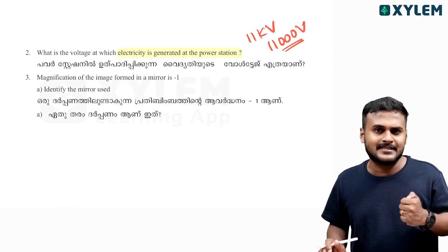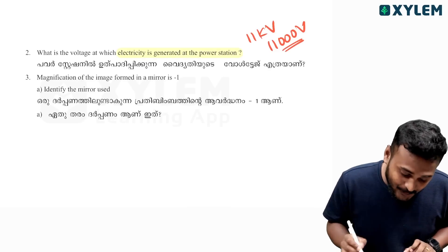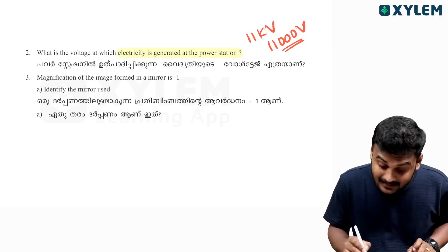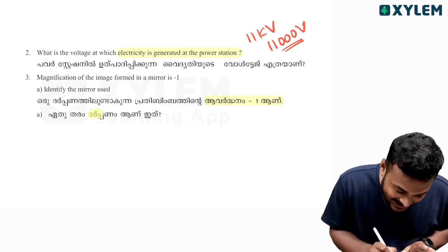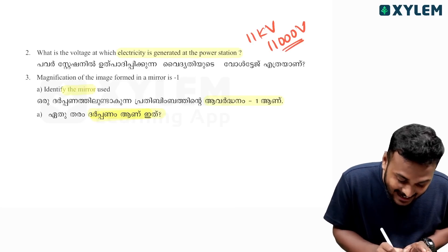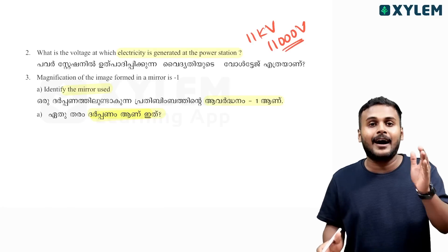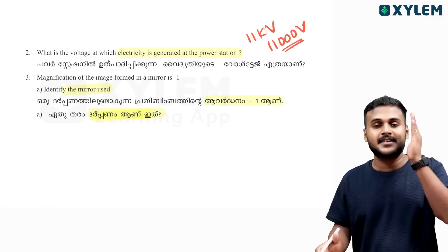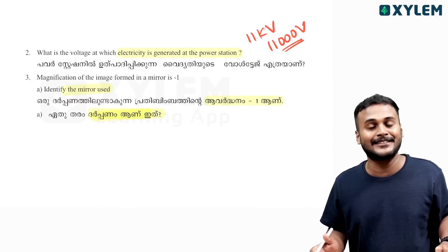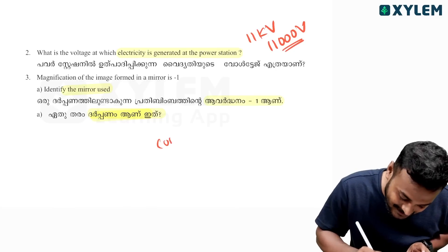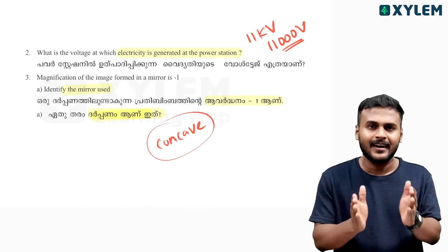So guys, we are moving to our next question. Third question we will answer. If you have a mirror, the magnification of the mirror is minus 1. Now, what is the mirror? Identify the mirror — minus 1 is the magnification of the mirror. Let's see — if it is a concave mirror, you can see it in a concave mirror. That's a concave mirror with a magnification of minus 1.